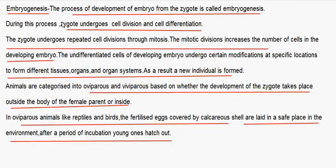Every sexually reproducing organism, including human beings, begins life as a single cell — the zygote. Embryogenesis is the process of development of the embryo from the zygote. During this process, the zygote undergoes cell division and cell differentiation. The zygote undergoes repeated mitotic divisions, increasing the number of cells. Undifferentiated cells undergo modifications at specific locations to form different tissues, organs, and organ systems, resulting in a new individual.